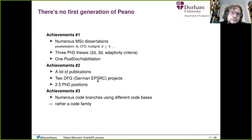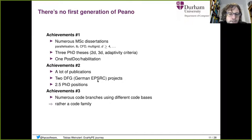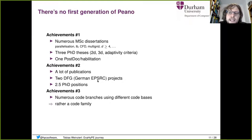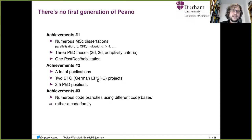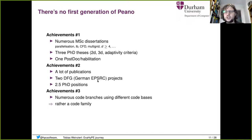That was the first generation of Peano — achievement number one. Multiple MSc theses, all three PhDs graduated. The code was written in 2D, 3D, with some adaptivity criteria, and it made one postdoc finish habilitation. We got a lot of publications out of that, and there were two DFG — that's the German EPSRC equivalent — follow-up projects. Unfortunately, we ended up with 10 to 12 different code bases. Everybody could do something different, but they were not compatible — it was a code family rather than one code.